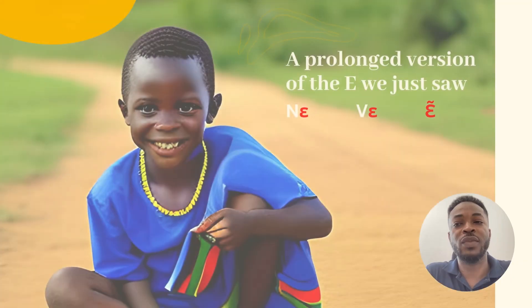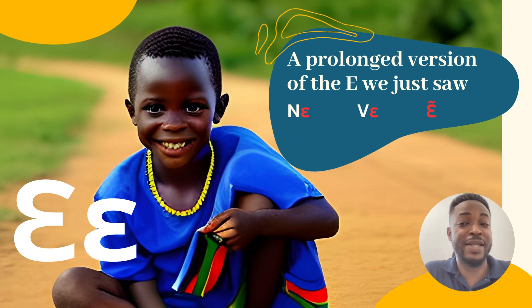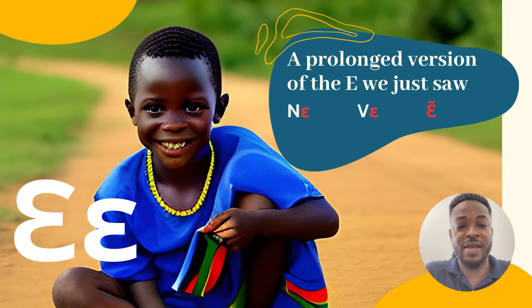The longer form of the vowel sound — in classical Ewe this is the letter used for such words as 'ne,' 've,' and 'a.' In Ghanaian usage there is a slight twist where it comes off almost as 'a,' so for them these words would be 'ne,' 've,' and 'a.'